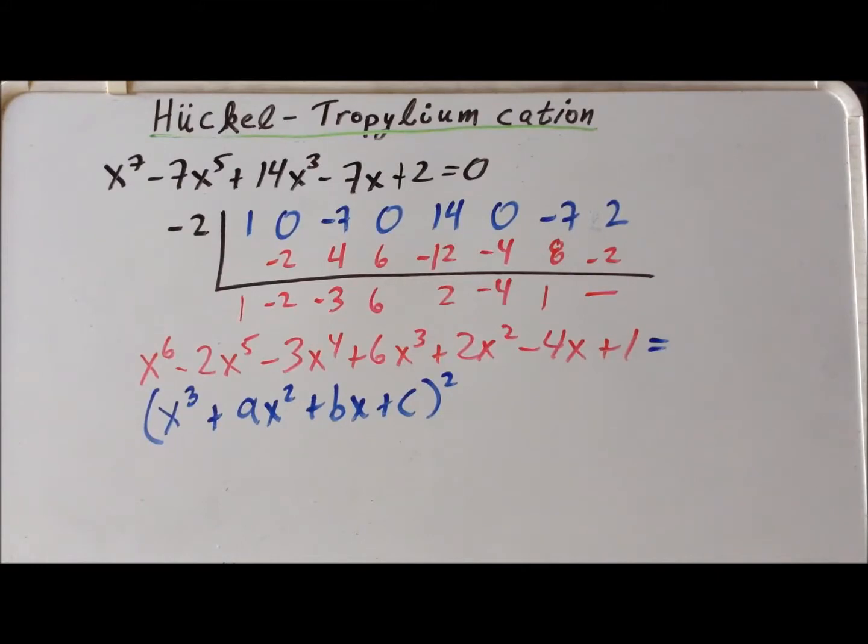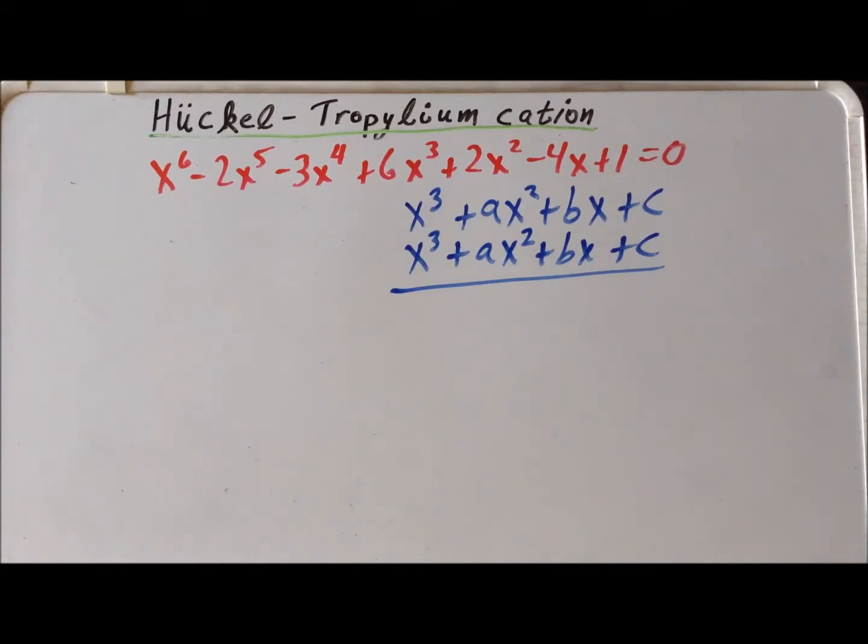So our challenge now is having made this assumption to determine what the possible values of a, b, and c would be, that they'd have to be to make this relationship true. I've taken the liberty of writing the sixth order polynomial at the top here in red to remind us what our target is. And here we have our two cubic equations that we imagine we'll be able to multiply square, so we'll multiply it by itself, and then find the values of a, b, and c such that the result is equal to the sixth order equation that we have in red.